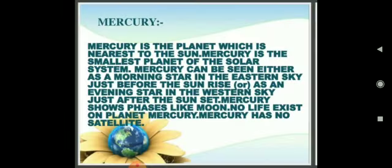Now we will talk about Mercury. Mercury is the closest planet to the sun, and it is therefore very hot during the day. It is covered with many bowl-shaped holes called craters, and it is the smallest planet. Because of the absence of atmosphere, the heat is quickly lost at night and it becomes freezing cold. It can be seen before sunrise in September and October, and after sunset in March and April. Mercury has no satellite of its own.